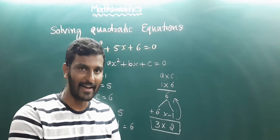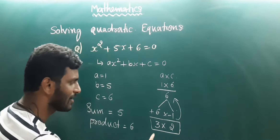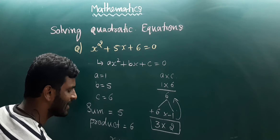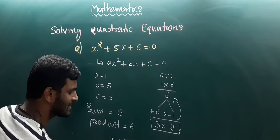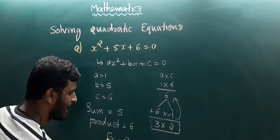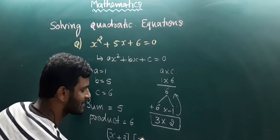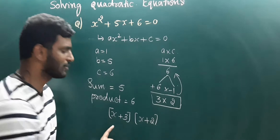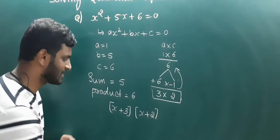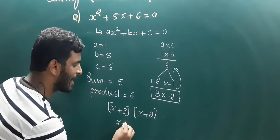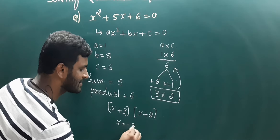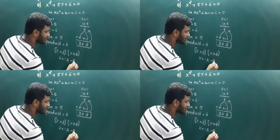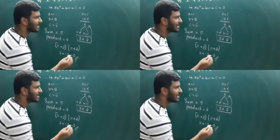Hence the factors are very simple. The factors are (x plus 3) and (x plus 2). So the two solutions are x equals minus 3 and x equals minus 2. This is the answer.